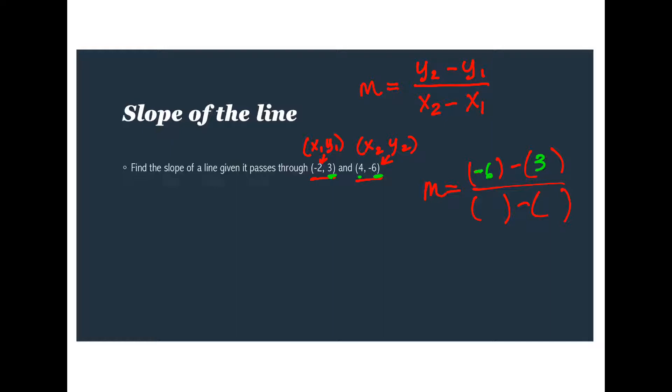So the way I've chosen, negative six would go first here and the second y, or the first y, y1 would be the three. Then I go for my x's. Since I started with negative six, four has to be what I start with on the bottom because it's x2 and y2, they are the same point. Then negative two goes in here.